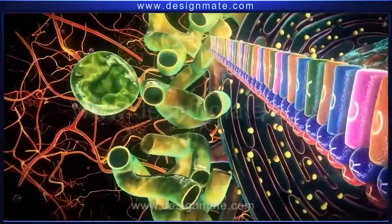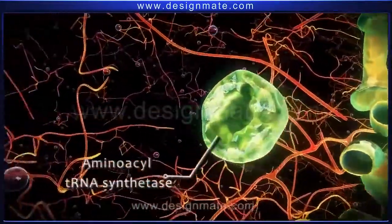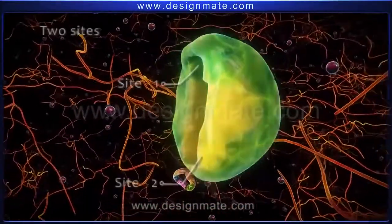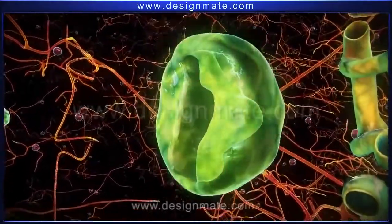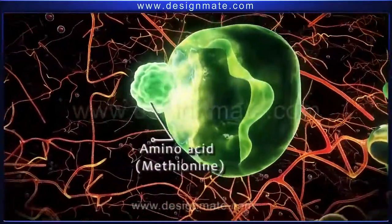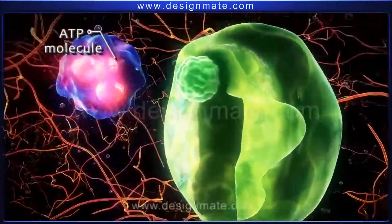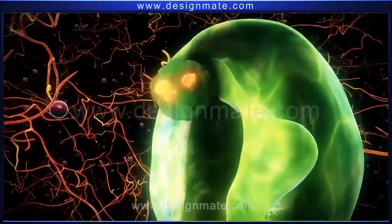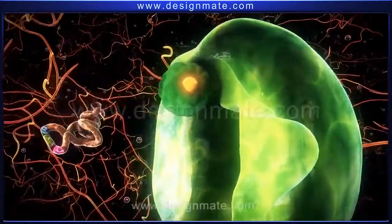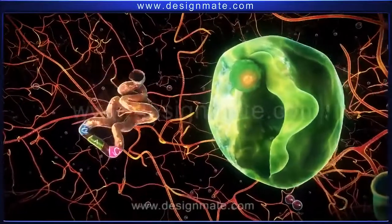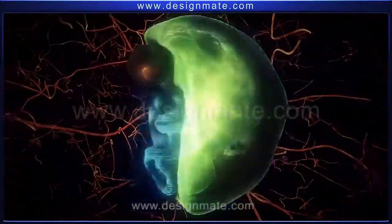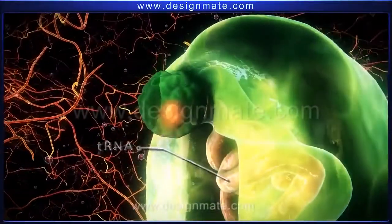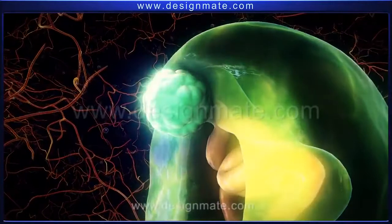Present in the cytoplasm is an enzyme, aminoacyl-tRNA synthetase. The enzyme macromolecule has two binding sites. One site recognizes the amino acid methionine. This is followed by binding of the ATP molecule and release of pyrophosphate, resulting in activation of the amino acid.